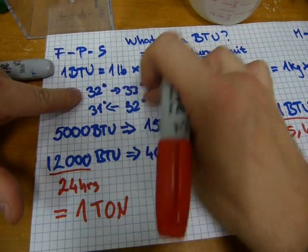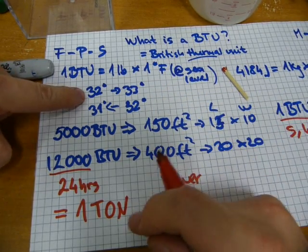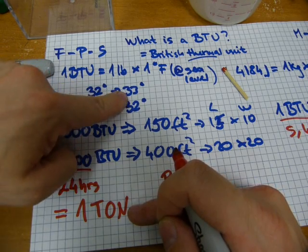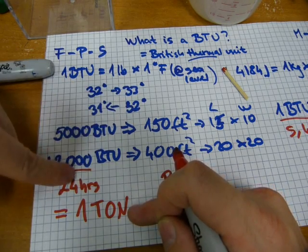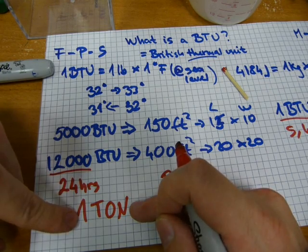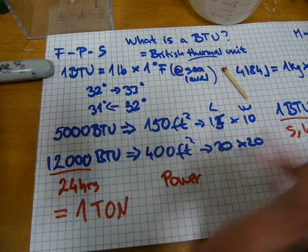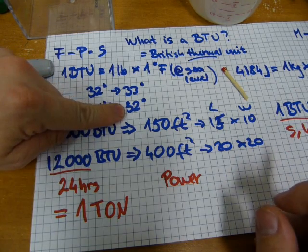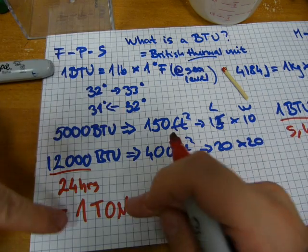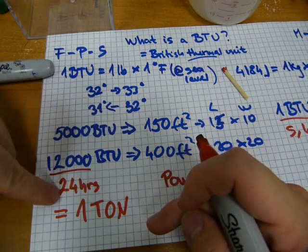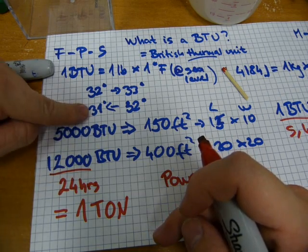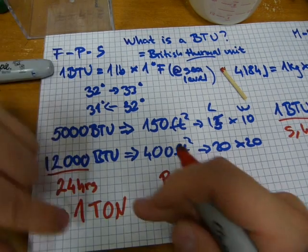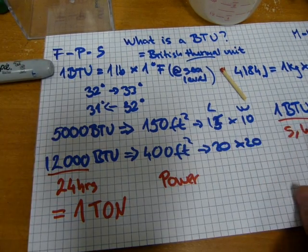Similarly to this concept, if one ton of water is at 32 degrees and you heat it up by one degree over a period of 24 hours, then one ton of cooling was done on that one ton of water. If water at 32 degrees Fahrenheit, one ton of water, is being cooled over a period of 24 hours to 31 degrees, which is going to be turning to ice, then one ton of cooling was done on that one ton of water.